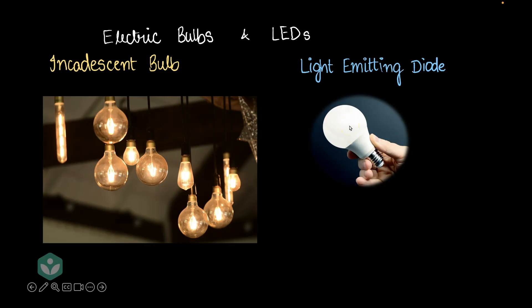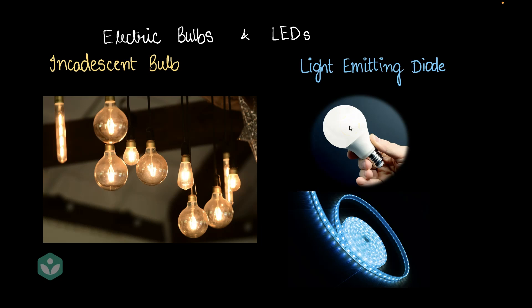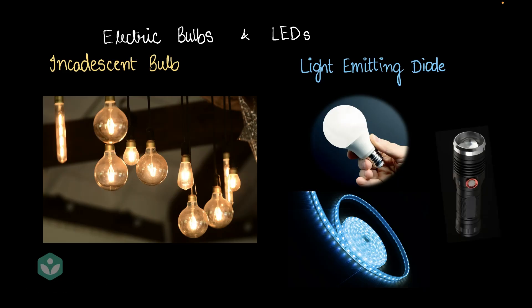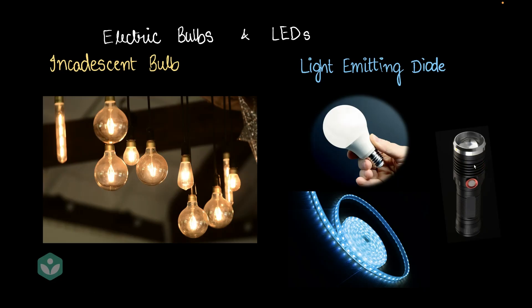Another very interesting use of LEDs is decorative lights — LEDs are strung together to decorate buildings and different things. Since LEDs consume very little power, they're also very good for torches, because a battery would run out quickly powering an incandescent bulb, whereas an LED would run for much longer on the same battery.